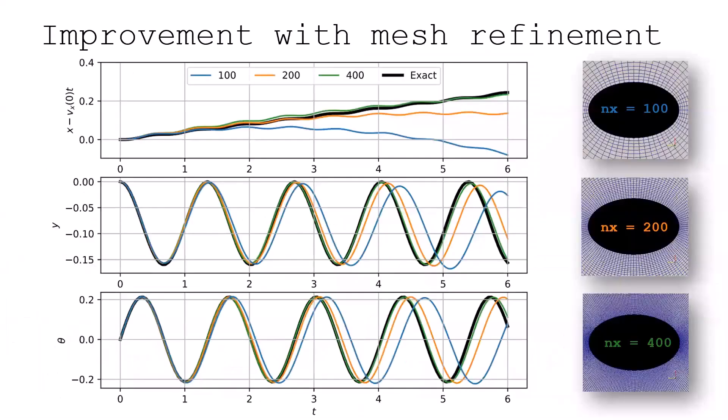And, of course, we've tried to do mesh refinements on this case with various meshes here. I show the x-axis, the x component, the y component and the orientation of this elliptic body as a function of time for three different mesh resolutions. And you can see it converges nicely to the black theoretical solution. So that's very nice.